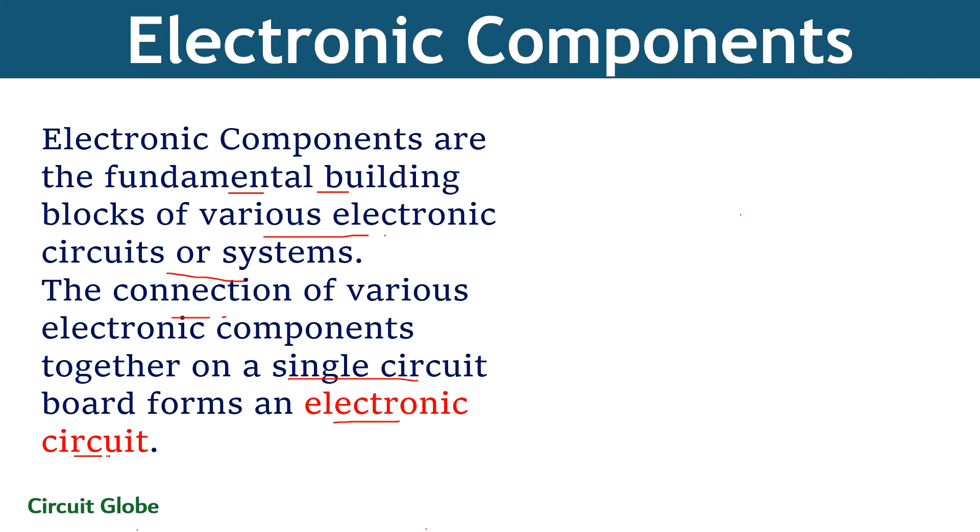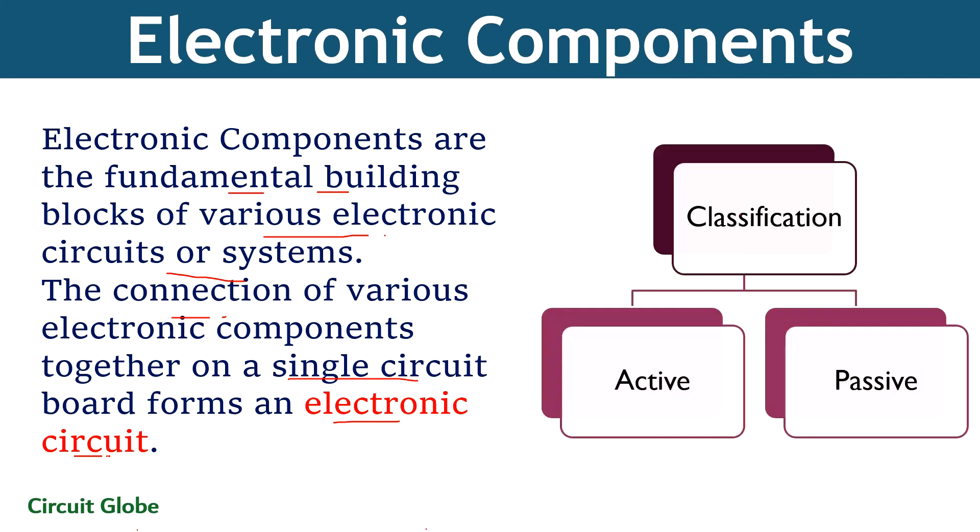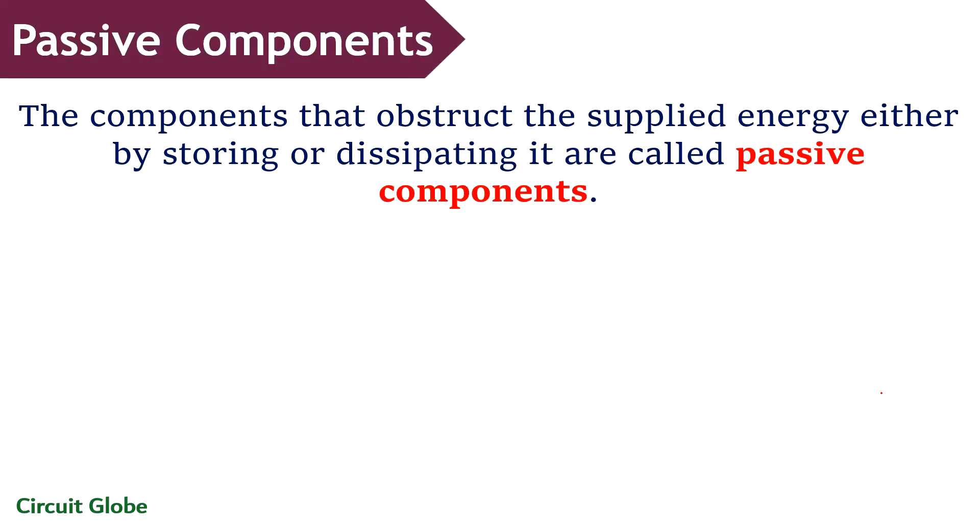And so we must know about the basic components that constitute any electronic system. Majorly, there are two types of electronic components. The first one is active, while the other one is passive. Let us now proceed to understand each type separately. So let's first understand passive components.